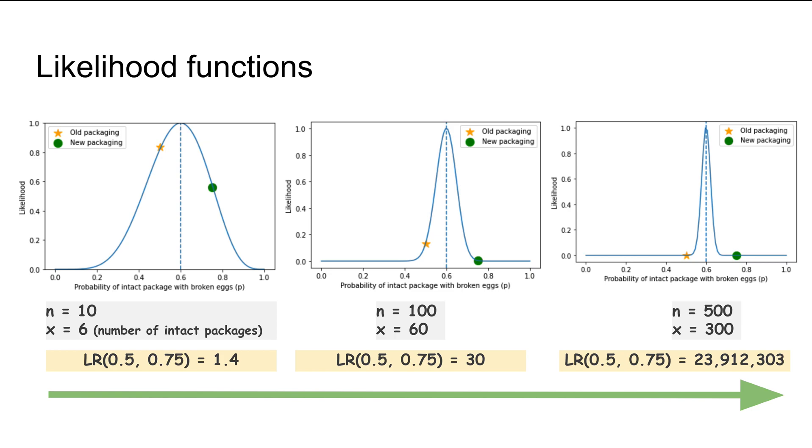Going from left to right, we can see that the number n is increasing from 10 to 100 to 500, and X, the number of successes (intact packages), is 6, 60, and 300. The proportion is the same. If you look at the dotted line in each plot, that is the maximum likelihood at 0.6 in all three plots.